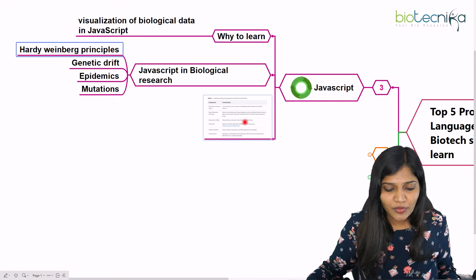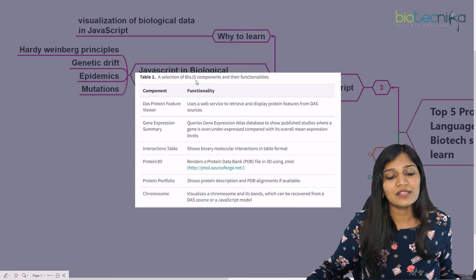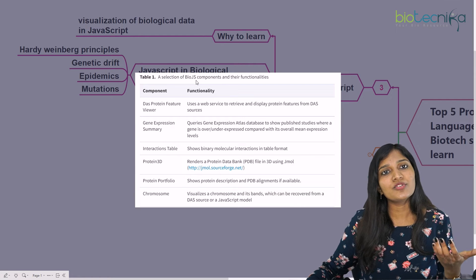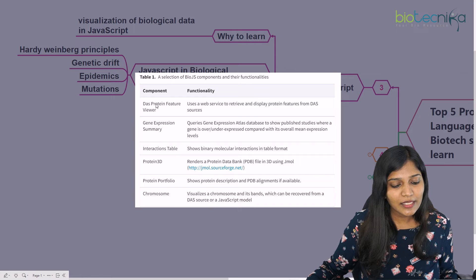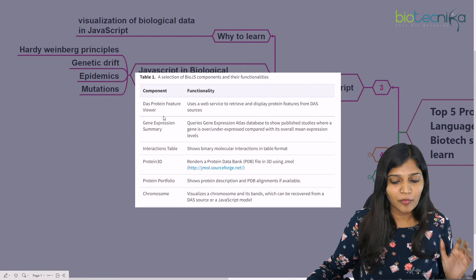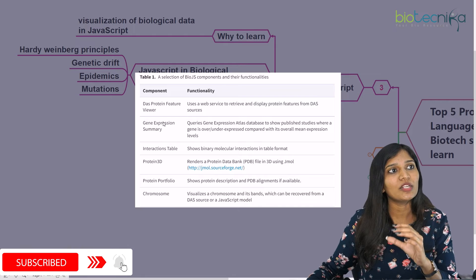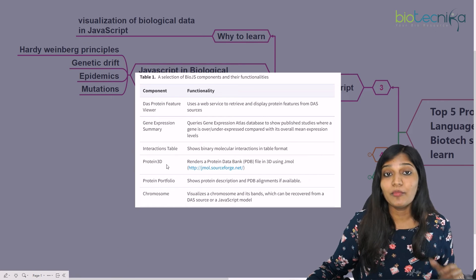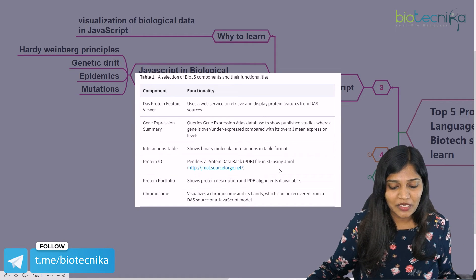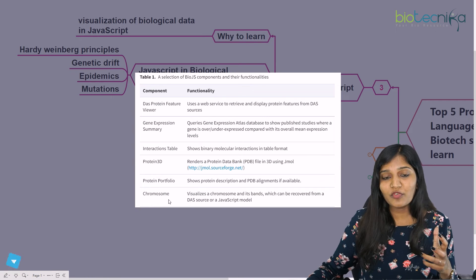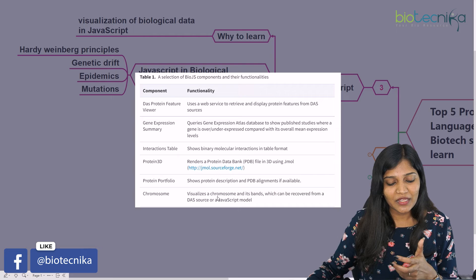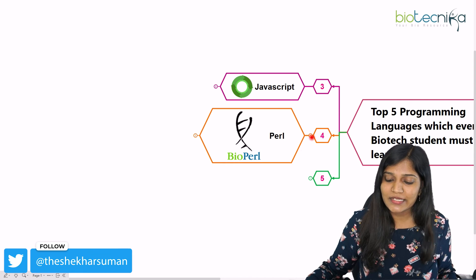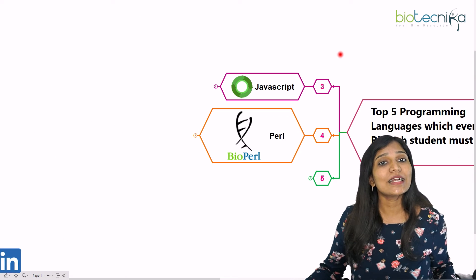JavaScript is a well-known programming skill used beyond biology, and you can incorporate it into visualization of biological data. BioJavaScript components include a protein feature viewer, gene expression summary, interaction tables, protein 3D dimensions in PDB format, and chromosome visualization. Visualization becomes very easy using JavaScript, making it one of the important tools to consider.